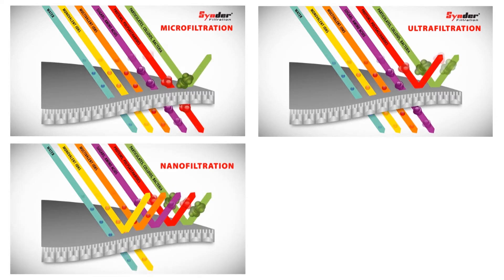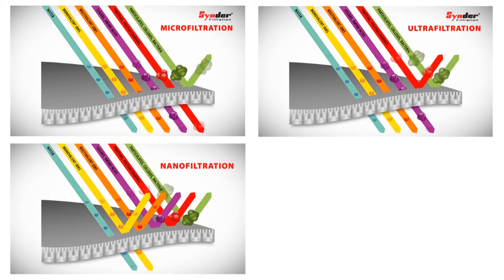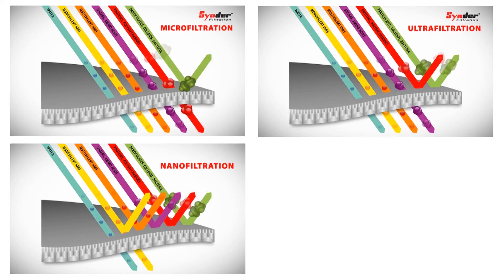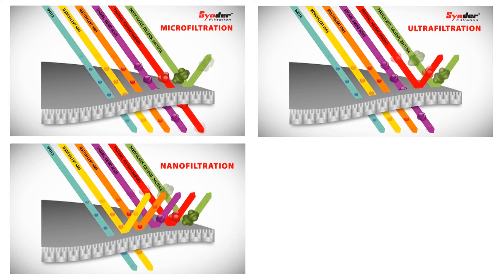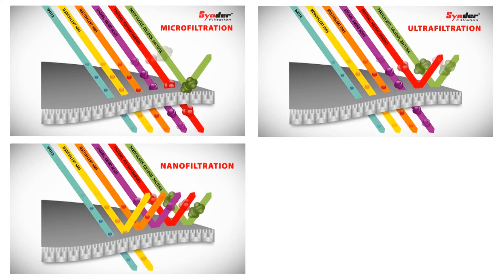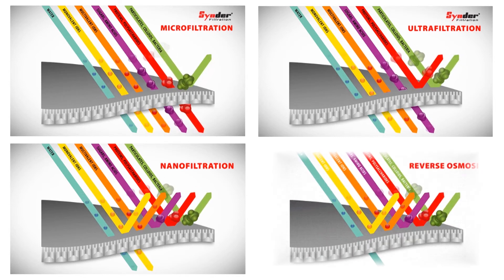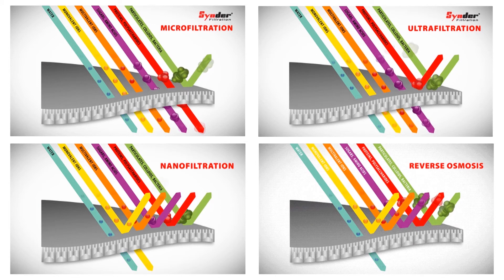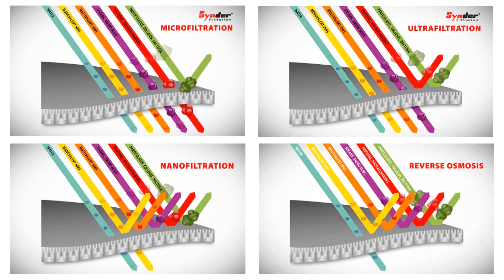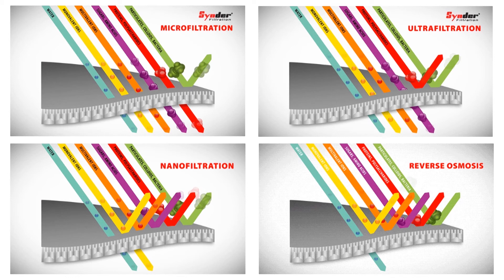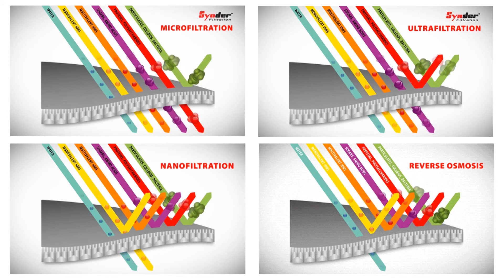Nanofiltration has even smaller pores and can reject ions such as calcium and magnesium, and nanofiltration can be used in water softening applications. And then the smallest pore size goes to reverse osmosis, which will remove essentially all organic and inorganic contaminants and produce contaminant-free water.